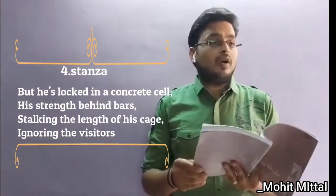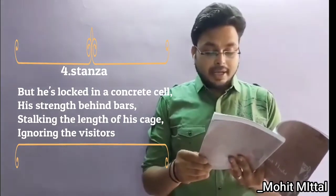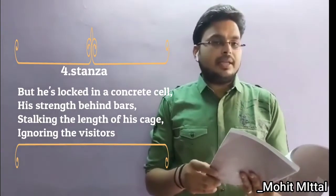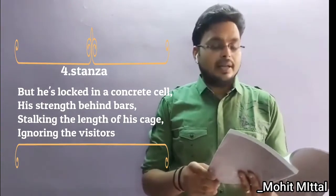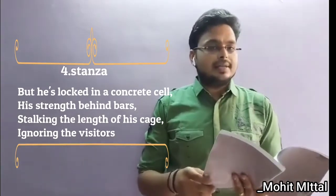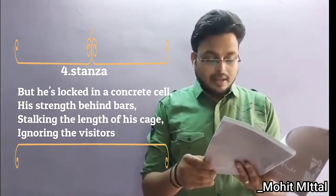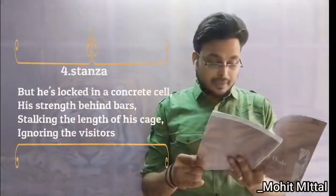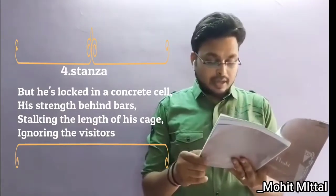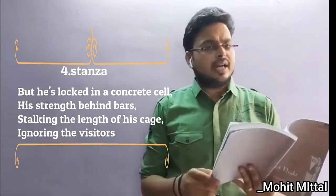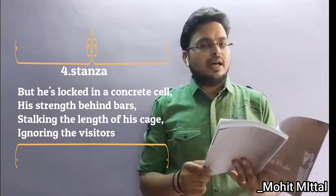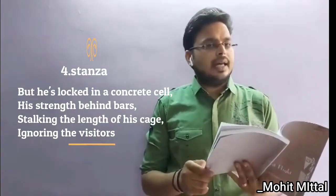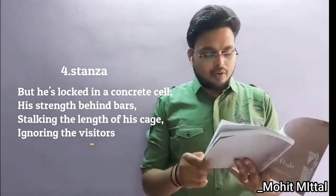'His strength behind bars, stalking the length of his cage, ignoring visitors.' Stalking means walking. The concrete cell is a cell made of stones and cement, and the tiger's strength is all locked behind bars. Stalking the length of his cage, ignoring the visitors — the tiger shows no interest towards visitors because he is walking in an angry mood, going back and forth in the cage.